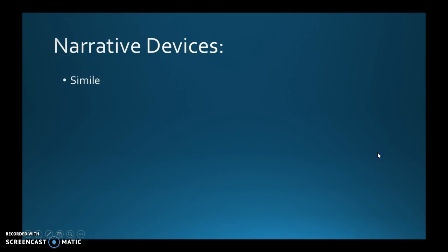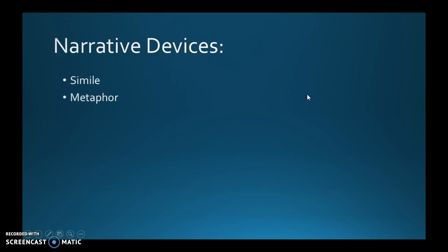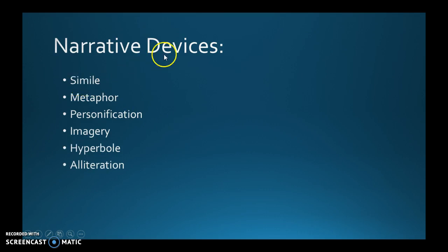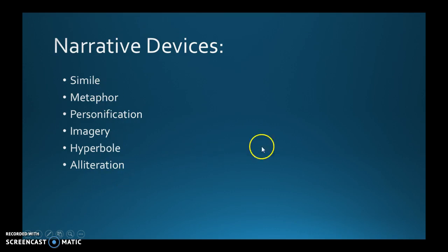Some of the narrative devices that are used include something called the simile — almost looks like 'smile' with an extra 'i', but it's pronounced simile — metaphor, personification, imagery, hyperbole, and alliteration. There are more than just these when it comes to narrative devices, but these are some of the more common ones, and we're going to go through each one to explain what they do and what they are.